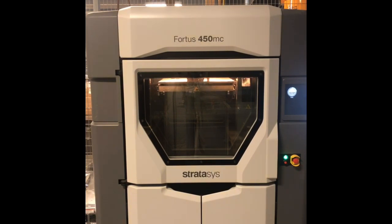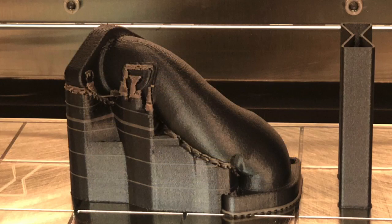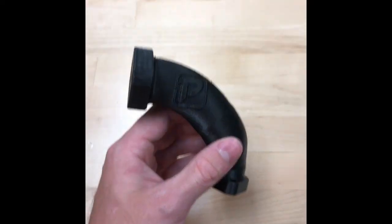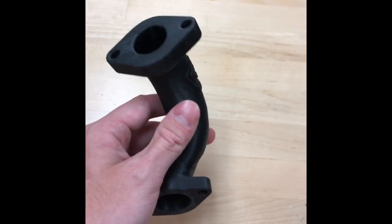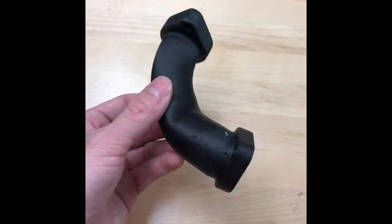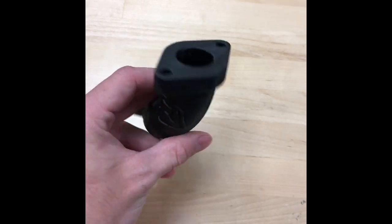So I'm just printing the part out of nylon carbon fiber on this Fordist 450MC. It's a really nice machine. It does excellent work and the finish of the plastic part when it comes out almost looks injection molded. As you can see here, here it is in its raw state. It still needs to be soaked. And then the final product here after it came out of the solution with all the supports removed.